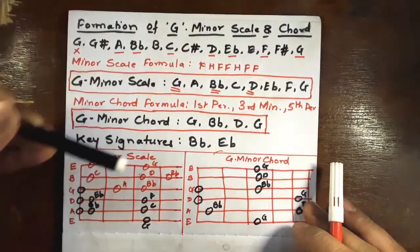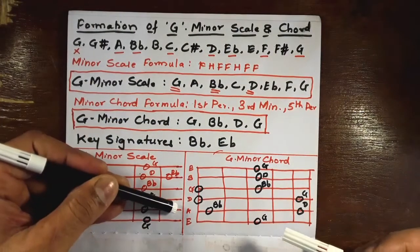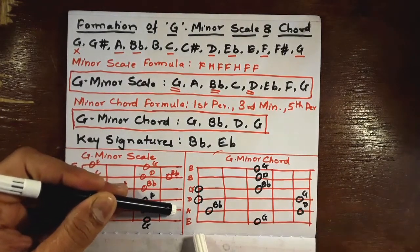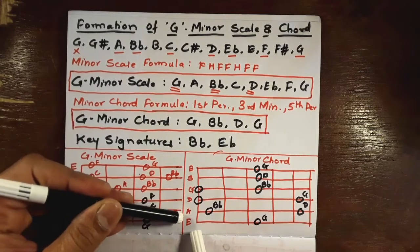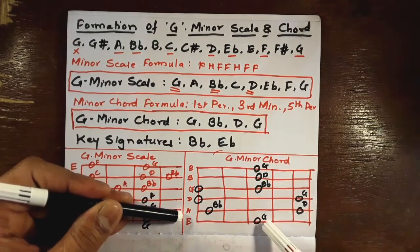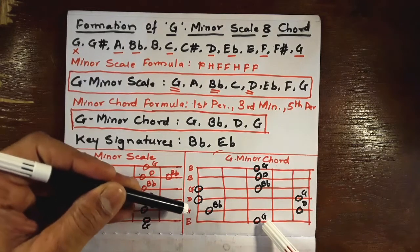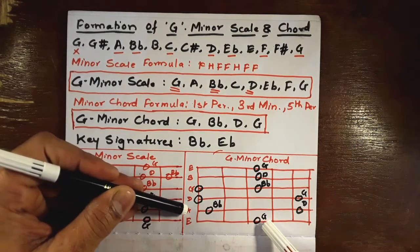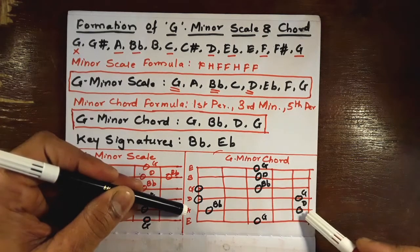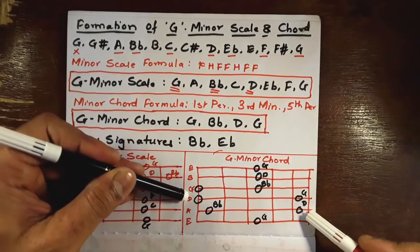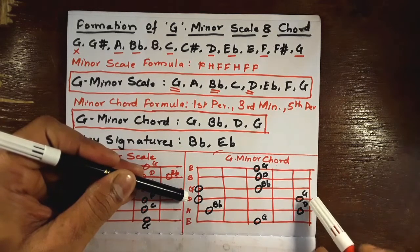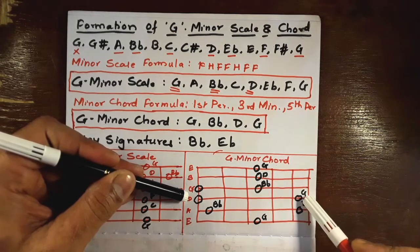Let's proceed further — again G, A, B flat, C, D, E flat, F, and G. We have now completed the G minor scale. On the E string we have a G note, and on the fifth string we have a B flat and a D.